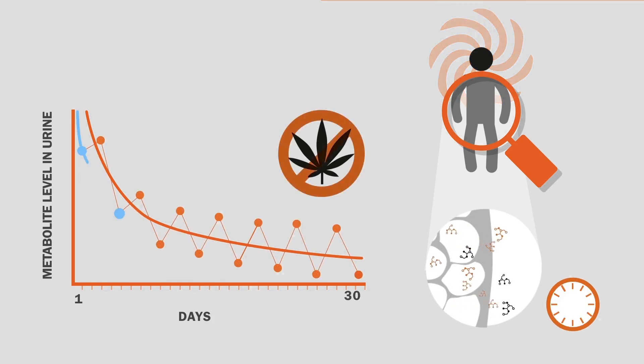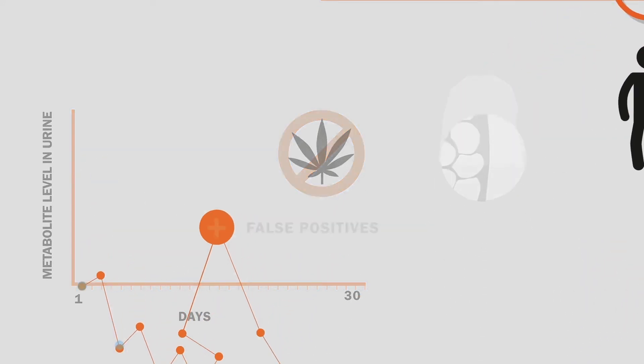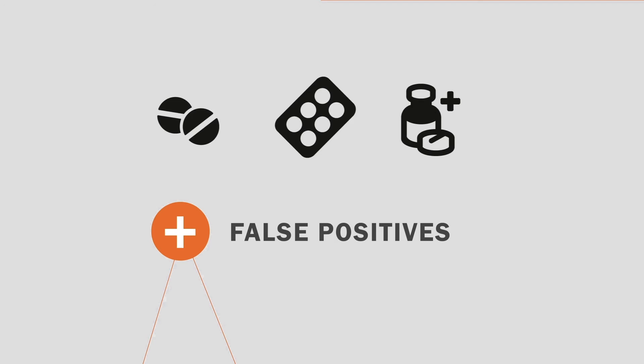Even if an individual has stopped using cannabis completely, intermittent tests can show spikes in daily levels and show a different picture. Some medications can cause false positive results, and it's impossible to test for every drug.